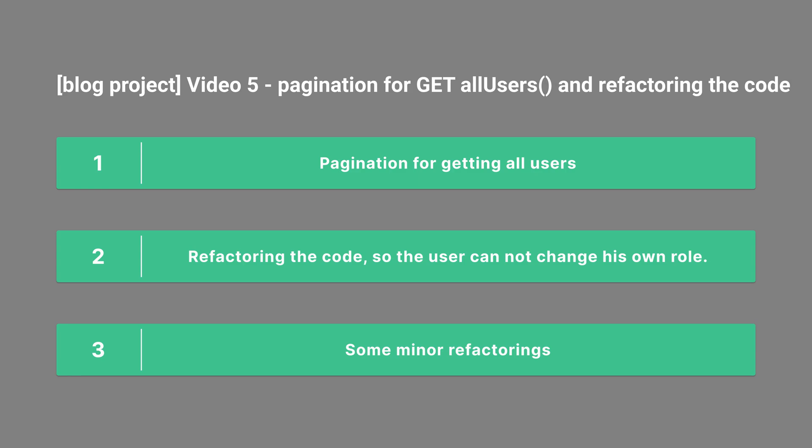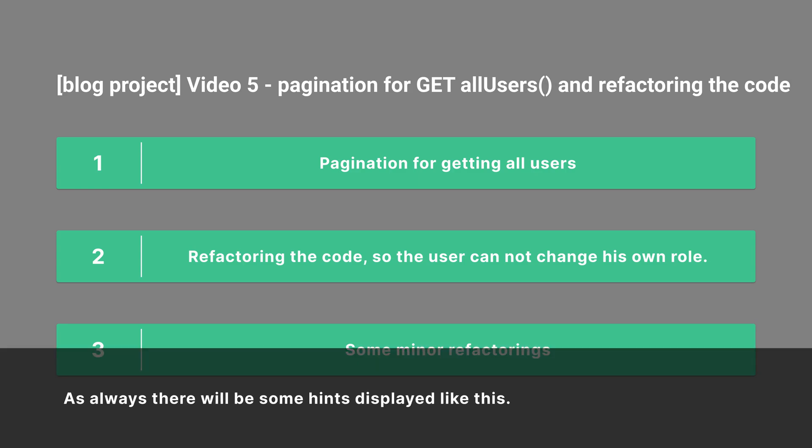We will also refactor some minor changes in the code so that the user cannot change his own role. If a new user is created, he will always have the user role and can only get the admin role if an existing admin gives him that role through our special endpoint, which is protected by JWT and role protection.